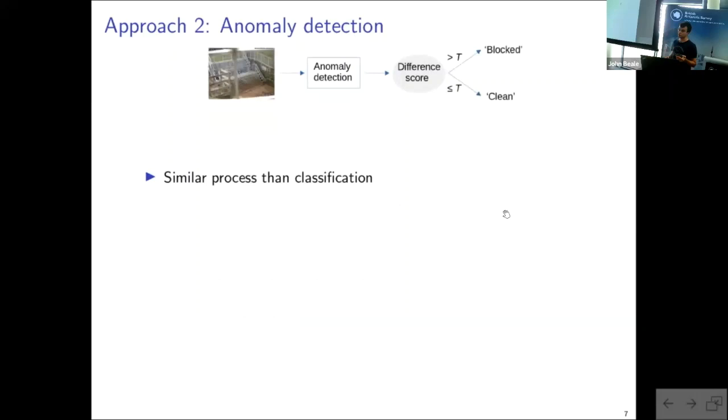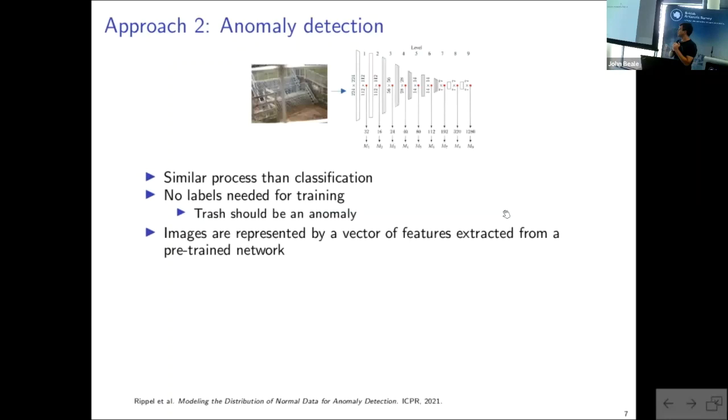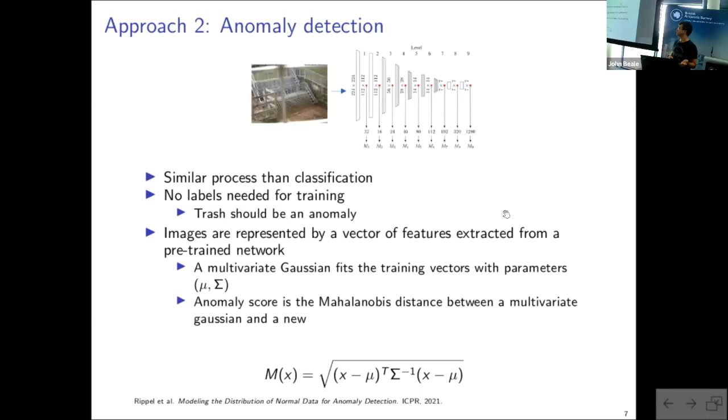So the anomaly detection has a similar process to the classification approach. So this time, we have a different score. But the big difference here this time, is that we don't need any labels to train the method. So, trash here should be considered as an anomaly, because as you noticed, I have much less blocked images than I have clean. And so the idea is to do this, I reused methods of anomaly detection from the state of the art. The idea is to represent each image with a small vector feature extracted from a pre-trained network, and fit a multivariate Gaussian to the training vectors of the training images. And then when I have a new image, I can compute its distance to the multivariate Gaussian using the same representation.